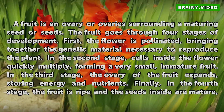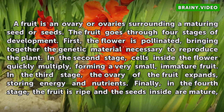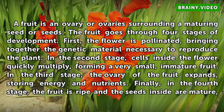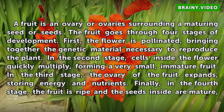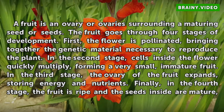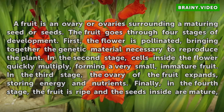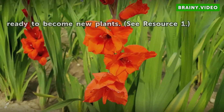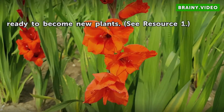In the third stage, the ovary of the fruit expands, storing energy and nutrients. Finally, in the fourth stage, the fruit is ripe and the seeds inside are mature, ready to become new plants.